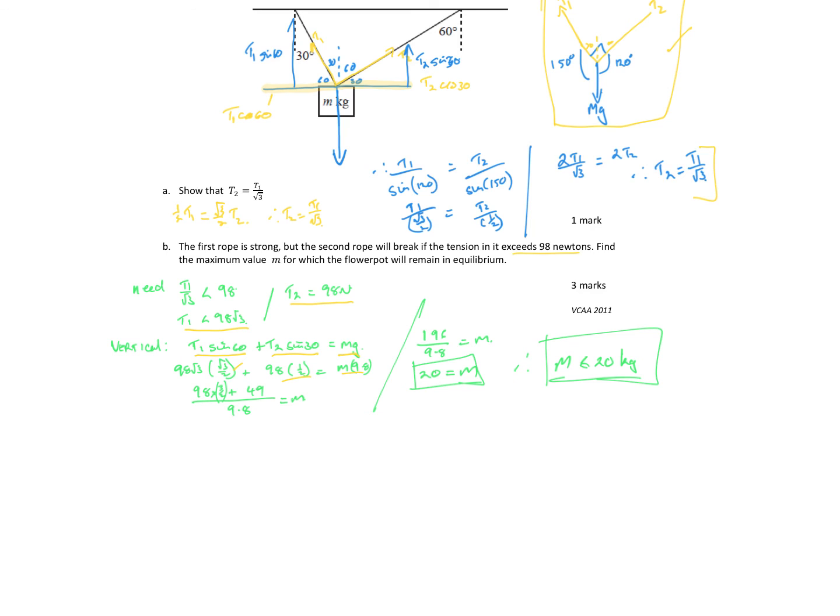We can rearrange that to solve for m. A half of 98 is 49. 98 root 3, well root 3 times root 3 is 3, so we get 98 times 3 over 2. It tidies up a little bit to give me a nice 20 for 20 kilograms. So that means the mass would need to be less than 20 kilograms, otherwise our rope will break.